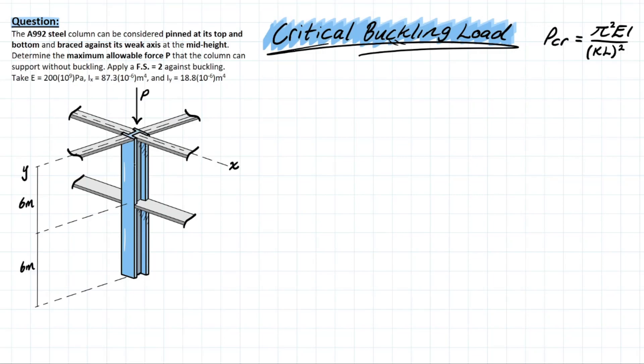The problem gives us all the important variables: Young's modulus and the moment of inertia about the x-axis and the y-axis for this column. If you want to recall concepts on critical buckling loads and effective lengths, you can go back and click the previous video, but in this one we're going to go quickly through this problem.